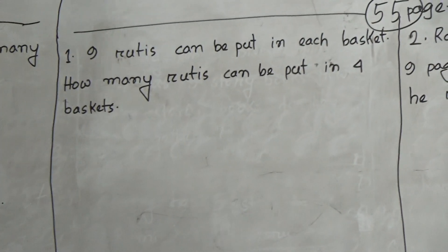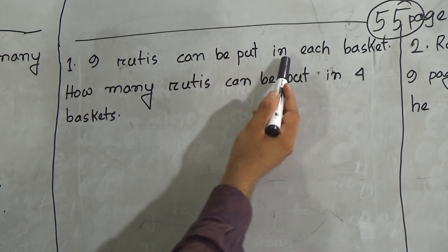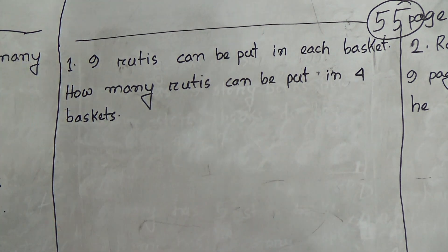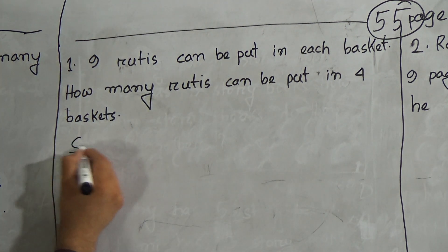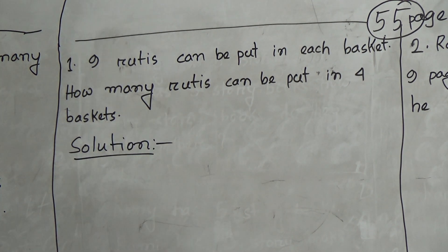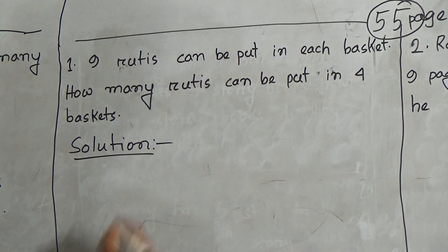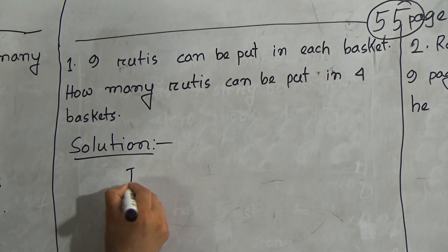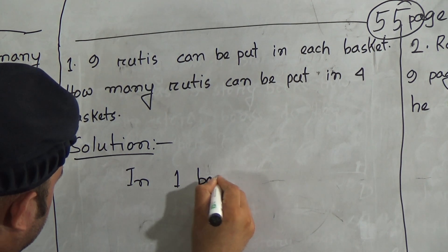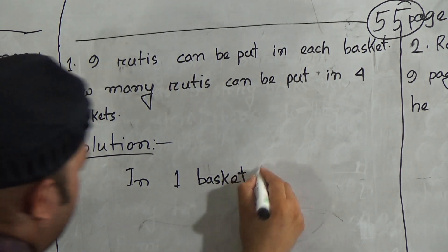Hope you understood that one. Now go to page 55. Question number one: nine fruits can be put in each basket. How many fruits can be put in four baskets? In one basket there are nine fruits.